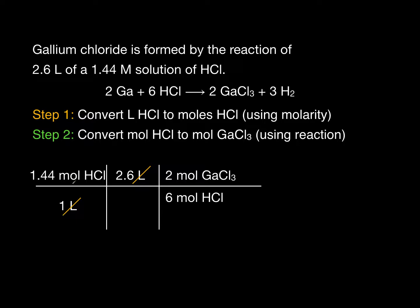You can see how the moles of HCl nicely cancel, leaving us with moles of gallium chloride. If we punch this out on our calculator, we get a value of 1.2 moles of gallium chloride. This is the answer to one of the first questions in part A.